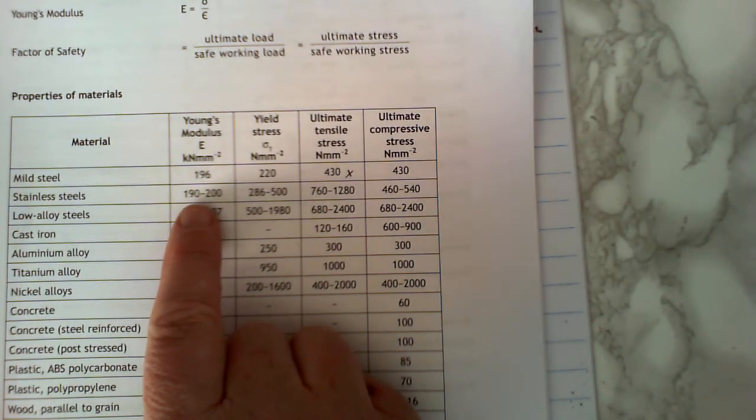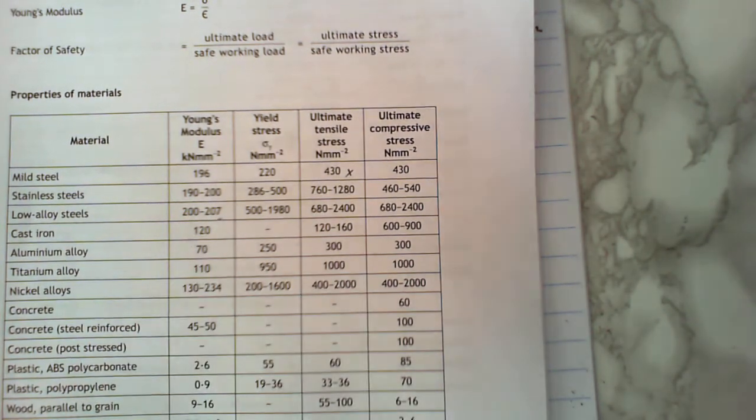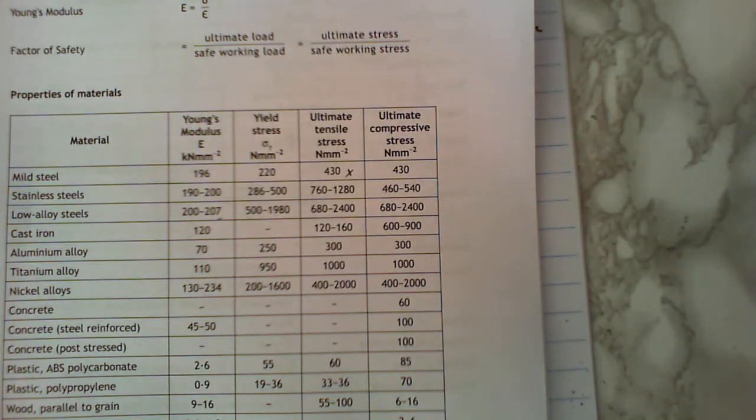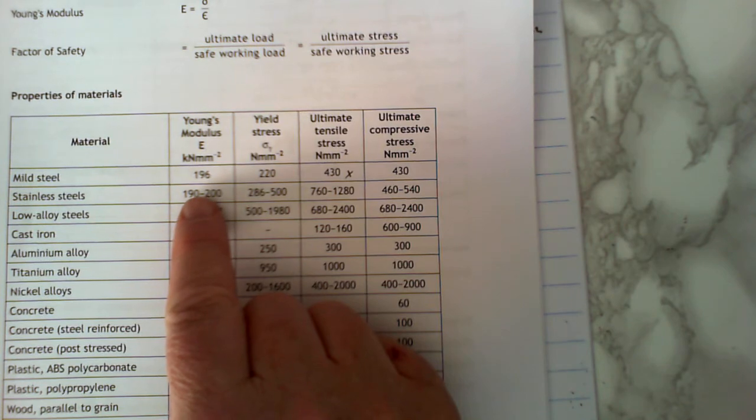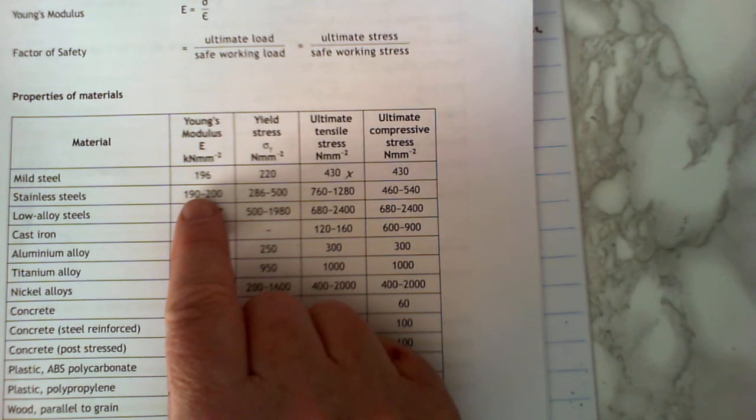Stainless steel, you'll notice that Young's has got a range between 190 and 200kN per millimetre squared. I'll plug right in the middle for 195, so that's where that value comes from when you see it in the calculation.